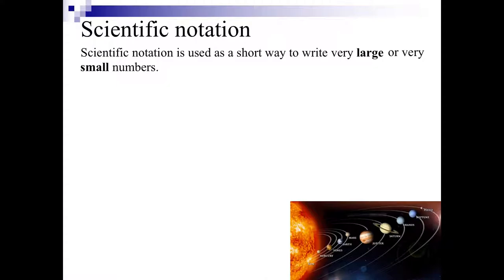So what we're looking at today is scientific notation. Now scientific notation is used as a short way to write really large numbers, such as the distance from Earth to Pluto, or really small numbers like the size of molecules.